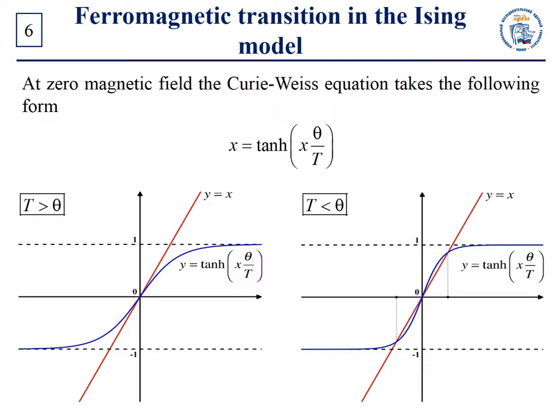Probably this divergence is due to a violation of the conditions of applicability of our solution. Indeed, we obtained that x is equal to the Bohr magneton times H divided by (T − θ). In other words, x tends to infinity as T tends to θ. Therefore, the condition T much greater than (H + xθ) is no longer satisfied. However, one can see that some critical temperature θ exists at which something happens — maybe it is a transition to the ferromagnetic state.